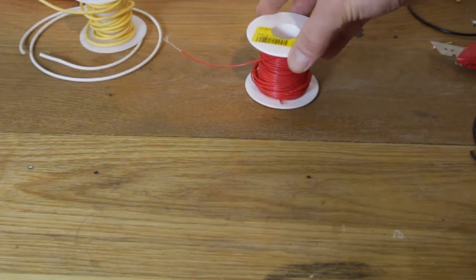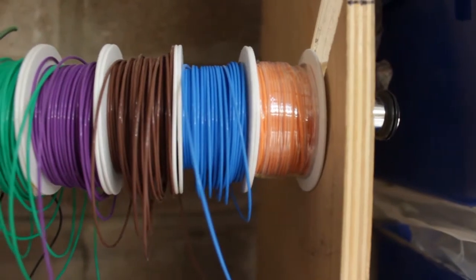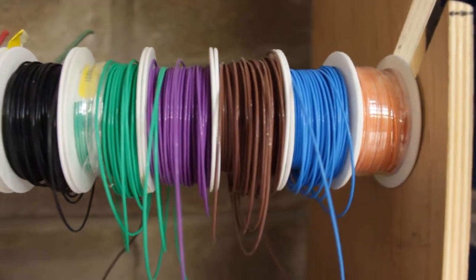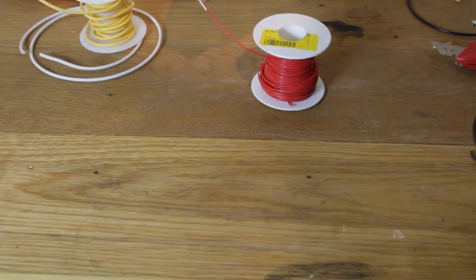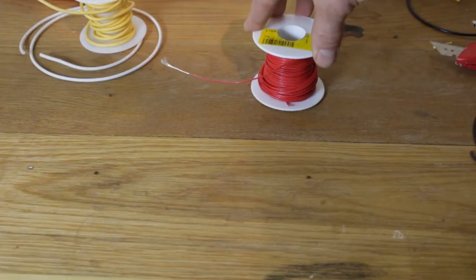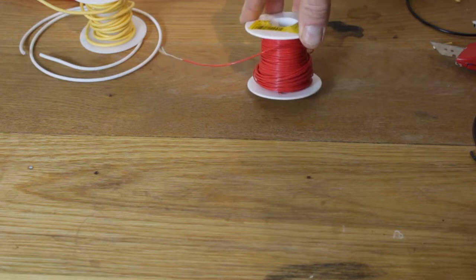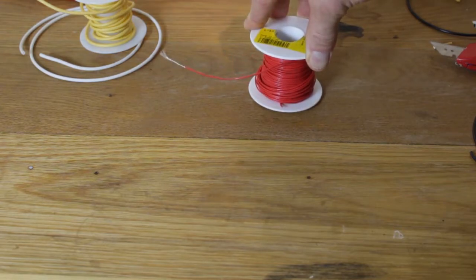The next wire is this Teflon insulated wire. It's a harsh environment high temperature wire and it's got a stranded core to it. Teflon is really great for working with as the insulation—it doesn't really melt, but we'll get on to that in a bit more.